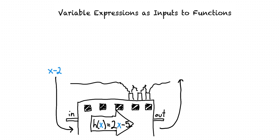We would write this as h(x minus 2), meaning we're going to pass the expression x minus 2 through our factory, which is the function h. When we do this, we replace x in our original function with x minus 2, which leaves us the expression 2 times (x minus 2) minus 5.